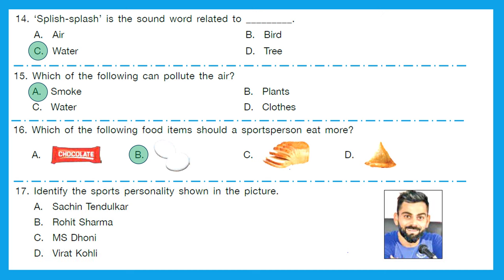Question 17: Identify the sports personality shown in the picture. Is it Sachin Tendulkar, Rohit Sharma, MS Dhoni or Virat Kohli? The right answer is option B — Virat Kohli.